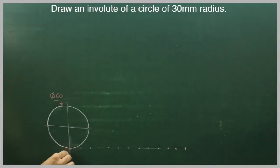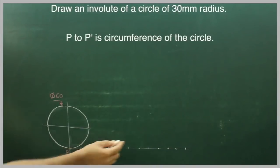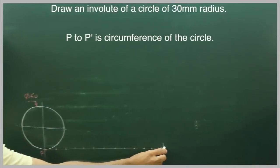First, we will take point B, then we will take the circumference of the circle from B to P' which is here.